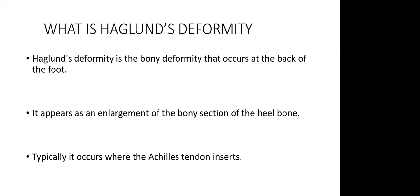The Achilles tendon originates from the calf — the proximal portion. It has two parts: on the medial side the gastrocnemius muscle, and on the lateral side the soleus muscle. Together they run distally and insert at the superior portion of the calcaneus. Our discussion is really based on the Achilles tendon and its insertion, where it inserts at the aponeurosis of the calcaneal bone.